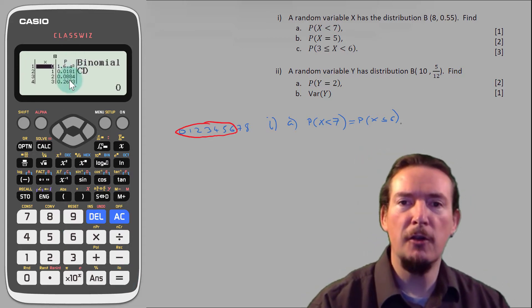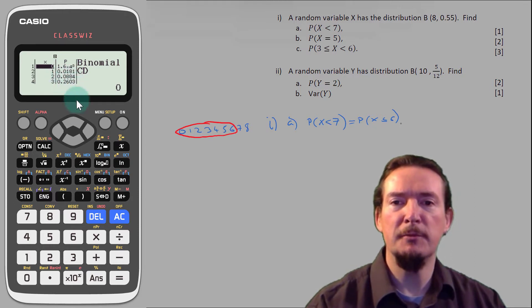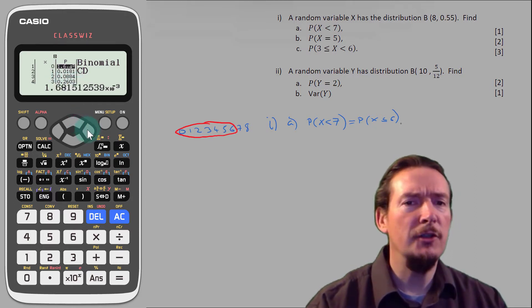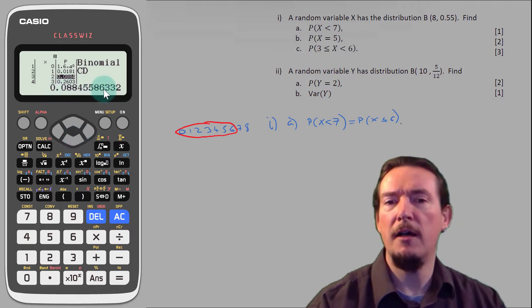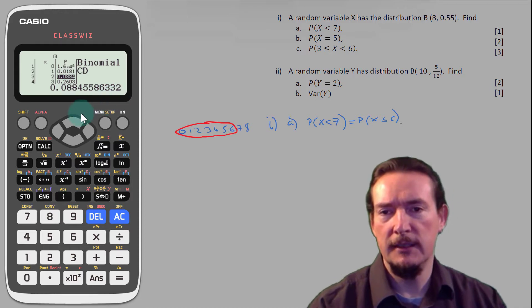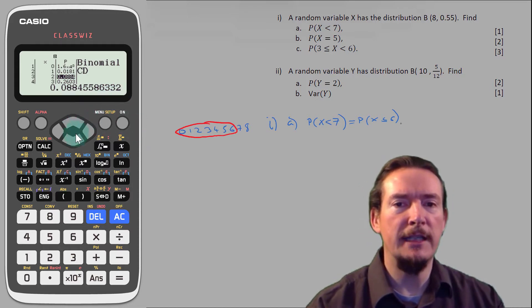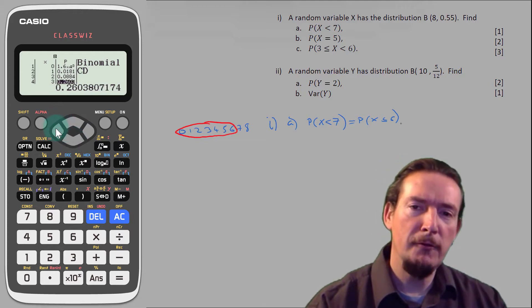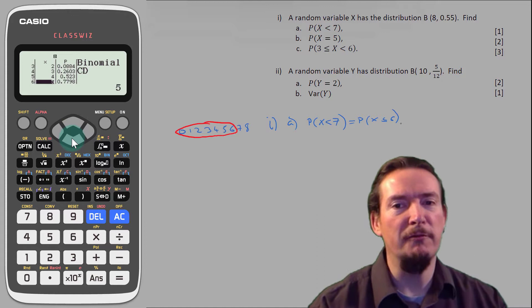You can use the direction keys to move around the table, and the selected value is shown to a high degree of accuracy underneath. We want x less than or equal to 6. Just be mindful that the first column refers to the row number, which is a little bit confusing actually, and might lead to some errors when you're under exam pressure.